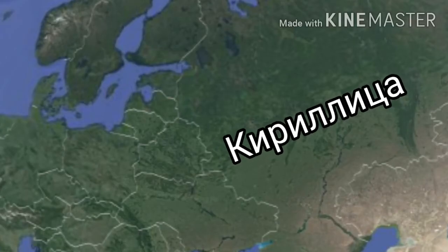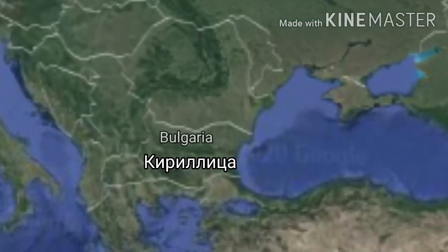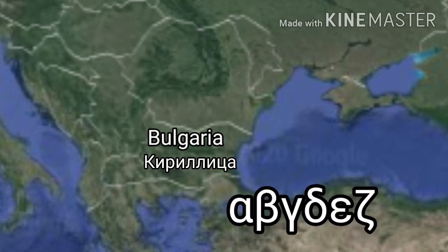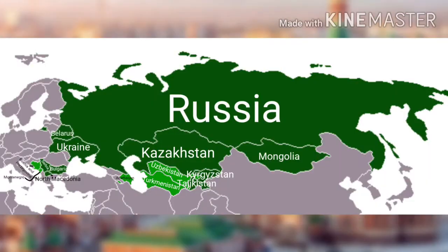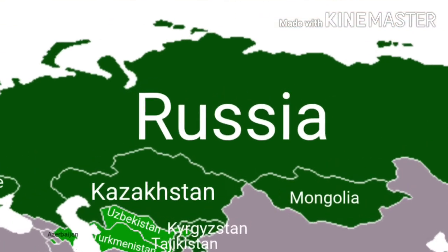You might think that the Russian alphabet originated in Russia by its name, but it actually originated in Bulgaria, being inspired by the Greek alphabet.